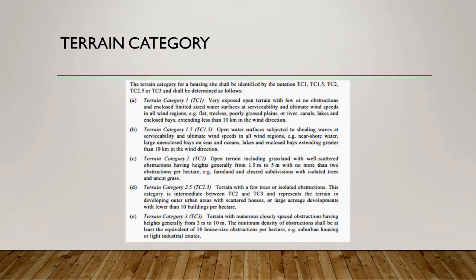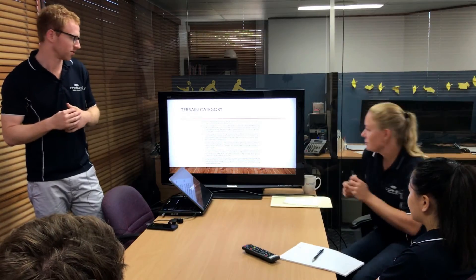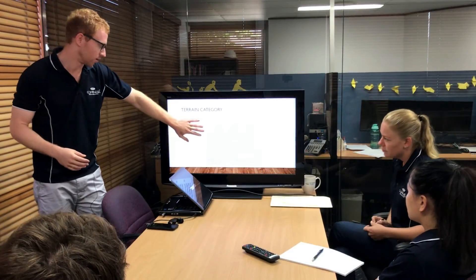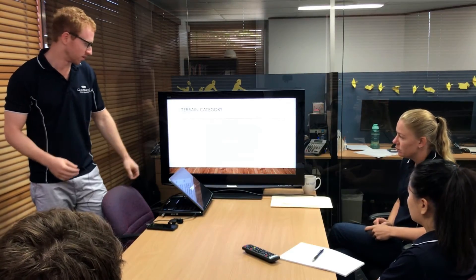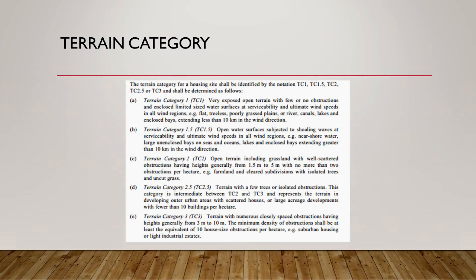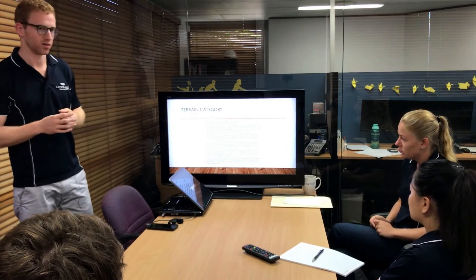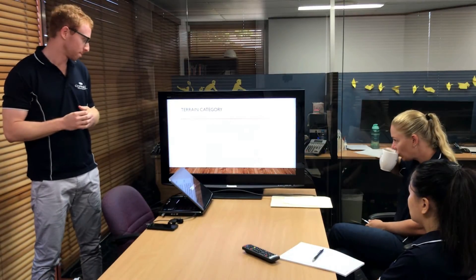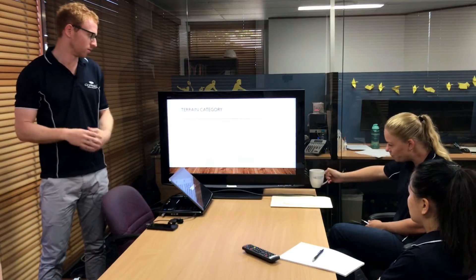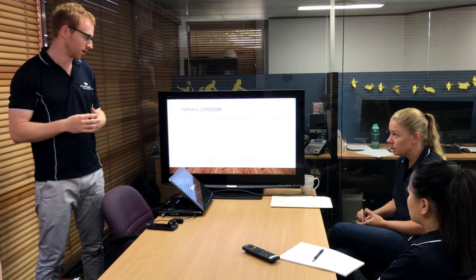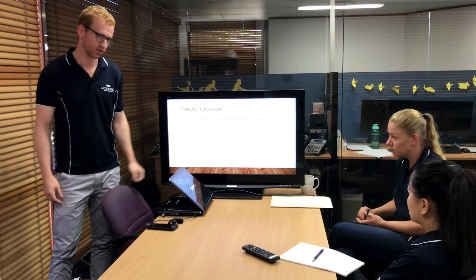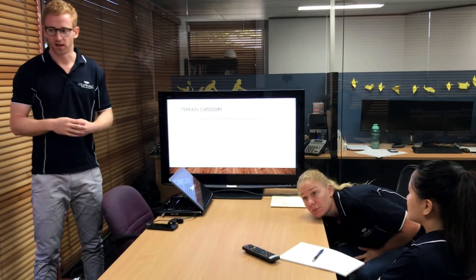The terrain category — these are actually more or less exactly the same as the terrain categories set out in AS1170. The first two are really for sites adjacent to water, which we do some work with, but more commonly we're dealing with the bottom three. Terrain Cat 2 I like to think of as just the middle of a cane paddock — essentially no obstructions whatsoever around the site to slow down wind speed. Terrain Cat 3 is the other end of the scale: built-up developed areas like Hendra, Chermside, Camp Hill around Brisbane. And 2.5, logically, is somewhere in between — acreage-type sites like Bridgeman Downs.